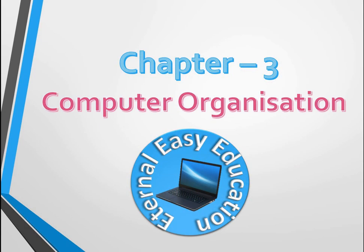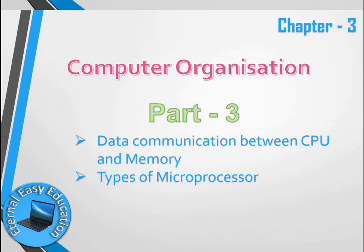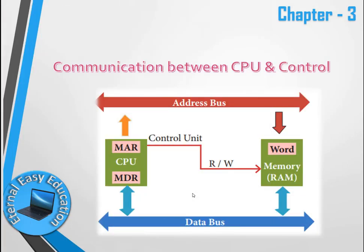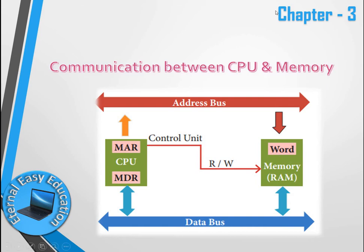Hello students, welcome to Eternal Easy Education. In this session you are going to learn Chapter 3: Computer Organization. The content of this video covers data communication between CPU and memory. Memory here means our main memory, RAM — the data is taken from the main memory to the CPU.